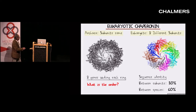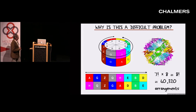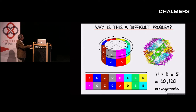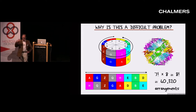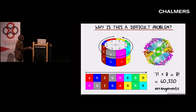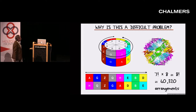The problem is: what is the order? It's a hard problem because there are so many different orders. If you have a string of eight colors in a circle, you can arrange them in seven factorial ways, because you can always start with the letter A. But if you have two rings, any one of the eight can be under A, so you have seven factorial times eight — a little bit over 40,000 different arrangements.